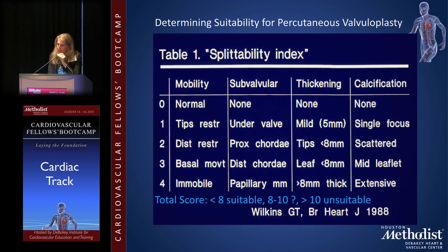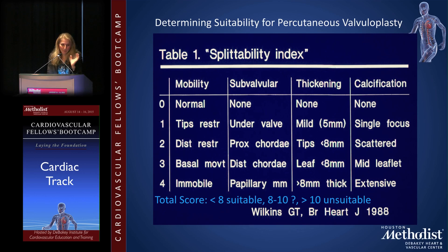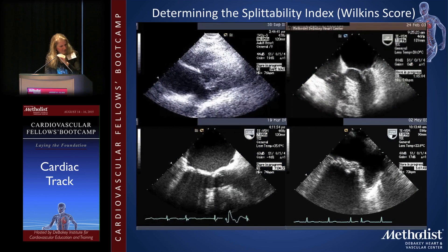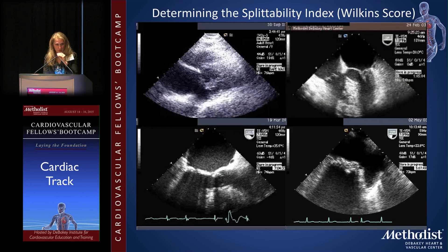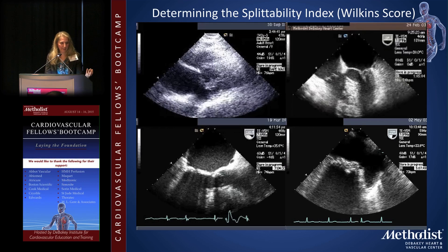The Wilkins score, also called the splitability index, is used by interventional cardiologists to determine whether a patient is appropriate for valvuloplasty. It has four categories, each receiving points. A total score less than 8 means the patient is suitable; 8 to 10 means they may be suitable; greater than 10 means they are unsuitable. Echocardiographic images illustrate this: valves with some thickening and calcification but still reasonable mobility and chordal involvement fall in the 8-to-10 range, while valves that are less mobile, more thickened, and more calcified score above 10 and are not candidates for valvuloplasty.